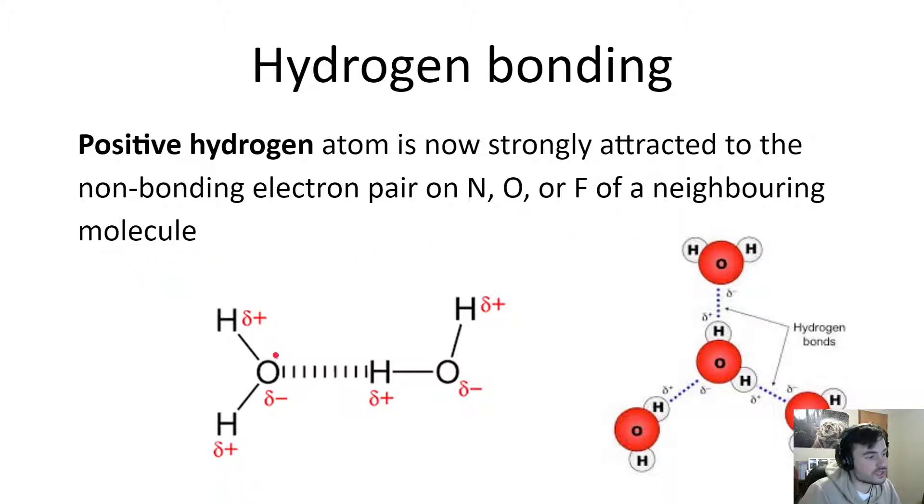Because remember, oxygen has these lone pairs on it. We have these two sets of lone pairs. And positive hydrogen, very positive hydrogen because oxygen is so electronegative, is going to be attracted to these. A very strong attraction.